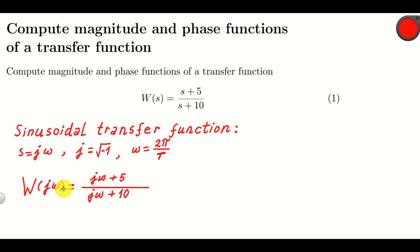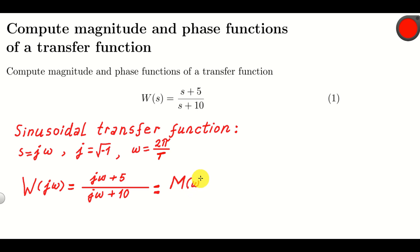This sinusoidal transfer function is a complex number. In the numerator we have a complex number and in the denominator we also have a complex number. If we divide two complex numbers we also obtain a complex number, and this complex number can be written in the polar form — it can be written as a function M of the radial frequency multiplying e to the power j phi as a function of omega.